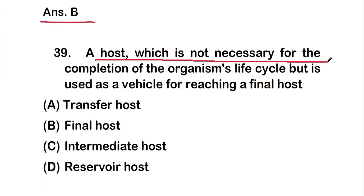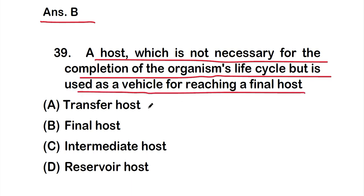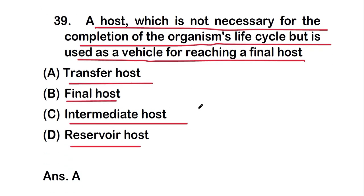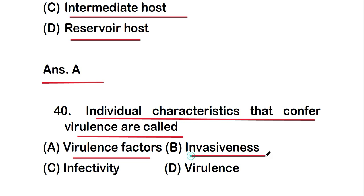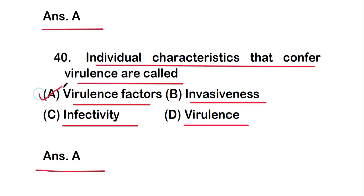Question number 39: A host which is not necessary for the completion of the organism's life cycle but is used as a vehicle for reaching a final host is called — Option A: transfer host, Option B: final host, Option C: intermediate host, or Option D: reservoir host. The right answer is Option A, transfer host. Question number 40: Individual characteristics that confer virulence are called — Option A: virulence factor. The right answer is Option A, virulence factors.